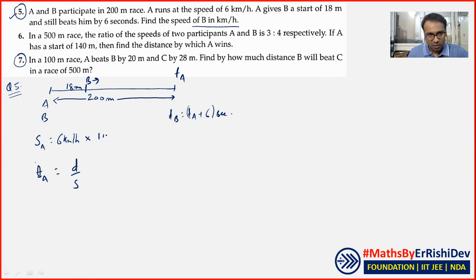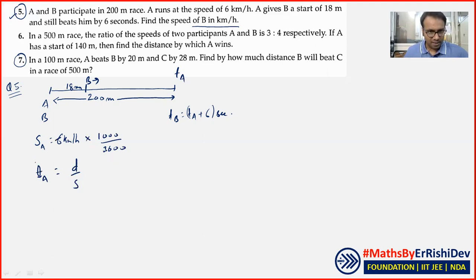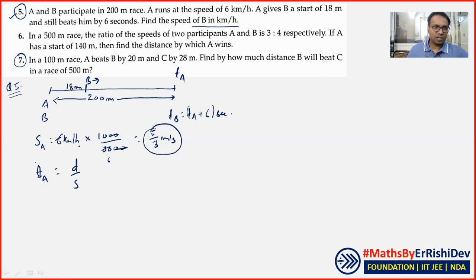1000 میٹر اور 3600 seconds سے multiply کروں گا۔ یہ میٹر per second ہے۔ 6 km/hr کو convert کرنے پر 5/3 میٹر per second آتا ہے — کیا میں اس کو 5 upon 3 میٹر per second کہہ سکتا ہوں؟ ہاں، I convert it into 5 upon 3 metres per second.